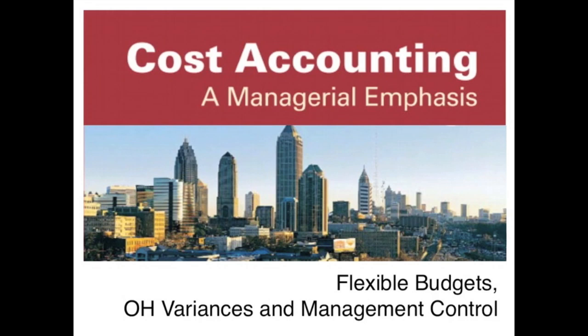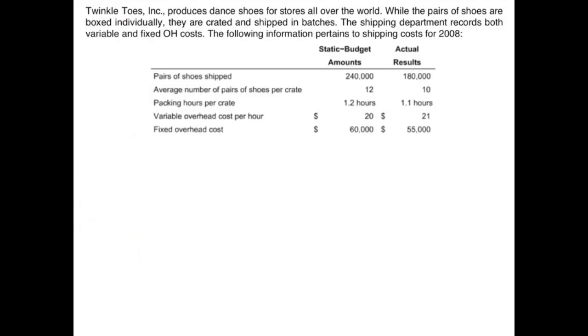In this video I'll be demonstrating how to compute overhead variances using an example which you can download from TheAccountingDoctor.com. Twinkle Toes Inc. produces dance shoes for stores all over the world. While the pairs of shoes are boxed individually, they are crated and shipped in batches. The shipping department records both variable and fixed overhead cost. The following information pertains to shipping costs.